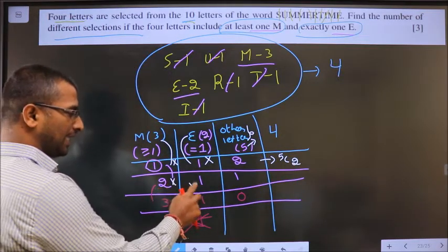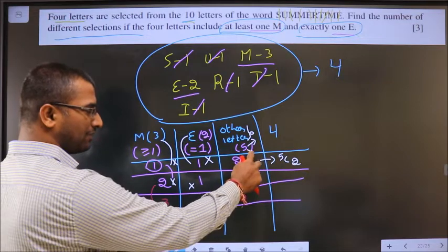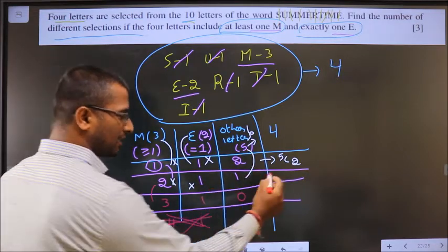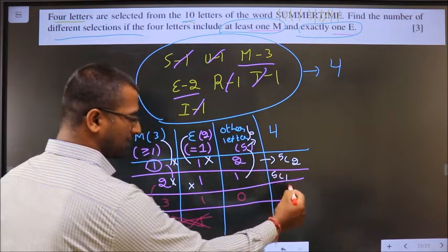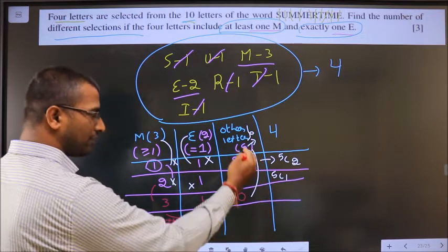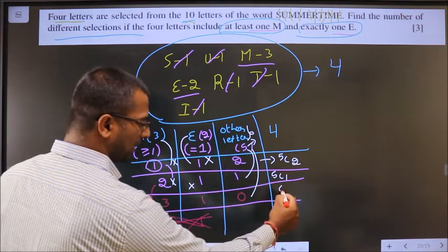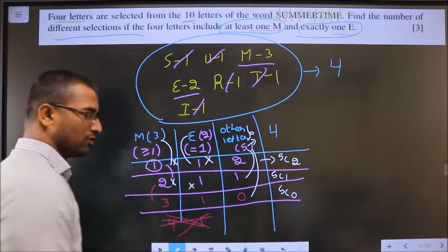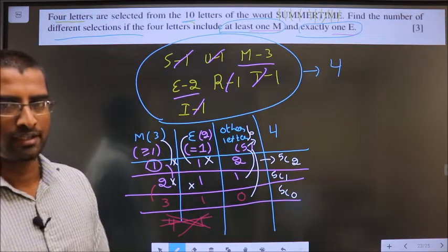Same thing. Here you won't write anything. From the 5 different you are selecting 1 letter that can be done in 5C1 ways. Same here, from 5 different you don't need to select anything that can be done in 5C0 ways.